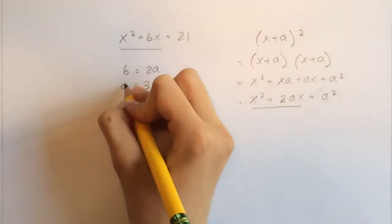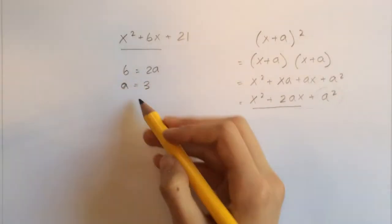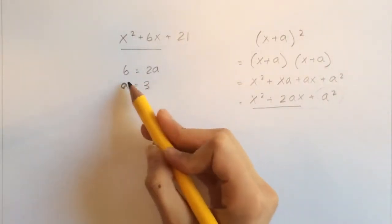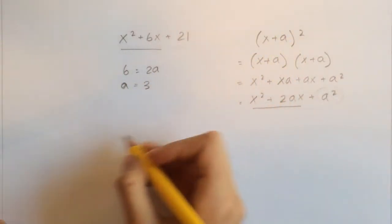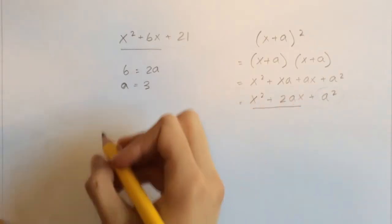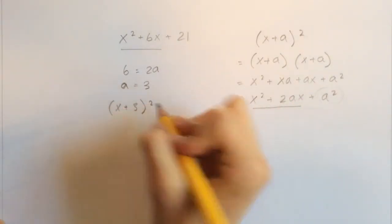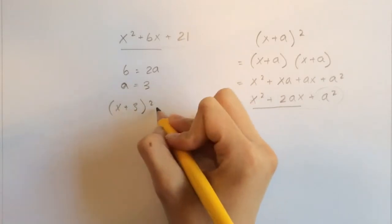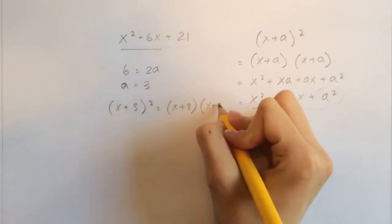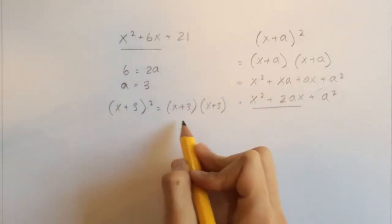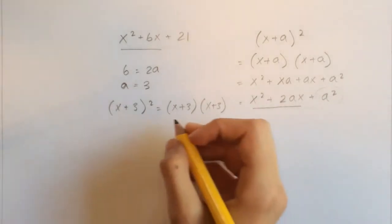Now that we've found that a equals 3, let's see what happens if we plug this a into this formula right here, into this equation. So that would become (x+3)², which is equal to (x+3) times (x+3).